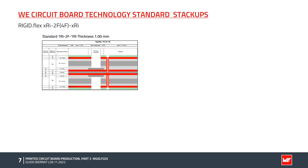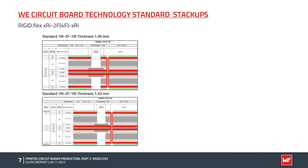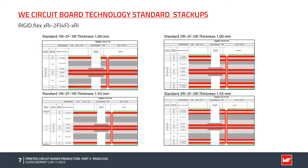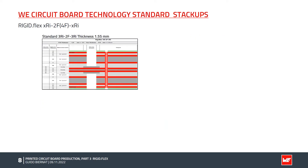The next standard stack-up is the same construction but with a thickness of 1.55 mm, with a difference in the thickness of the other four cores. The next standard is a 6-layer board — 2RI 2F 2RI — with thicknesses of 1 mm and 1.55 mm: two rigid layers, two flex layers, two rigid layers. In all these constructions, the flex core is always in the middle of the PCB board.